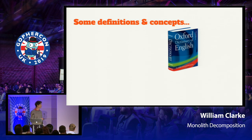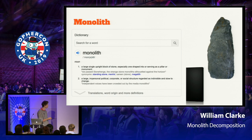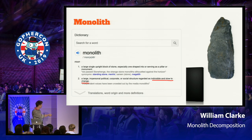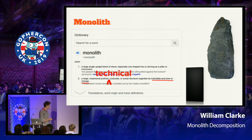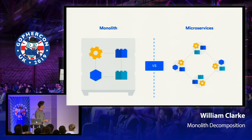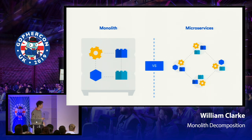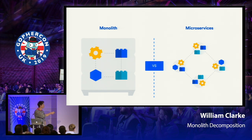Probably some boring definitions and concepts we should get out of the way. A monolith, according to Google, is a big block of stone. It also talks about being a large organization or social structure that's indivisible and slow to change — you could probably wedge in 'technical' there, because those are the monoliths we're going to be talking about. That's a monolith. These are microservices. A monolith is a big computer that has lots of things working in it, all in one conceptual machine.